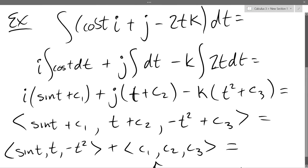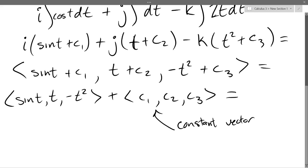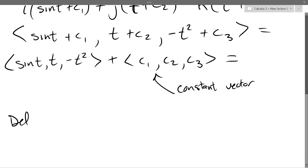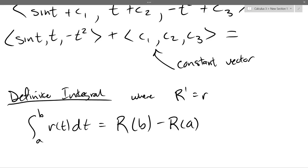So we have a, so this was an indefinite integral. We had no starting ending bounds, so no t value to begin and end at. And if we have a definite integral, where big R prime is going to be little r. So if you integrate a to b, little rt dt, this is big R of b minus big R of a. So this is exactly how it was before. We just use the letter f and x instead of r and t.